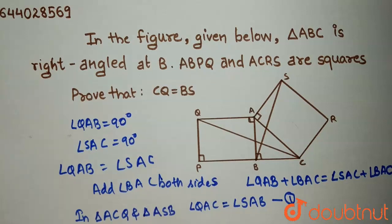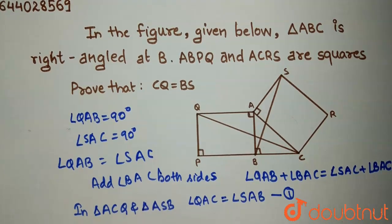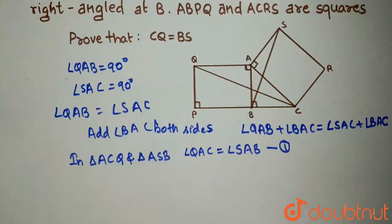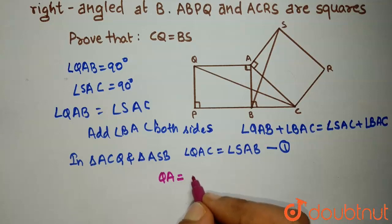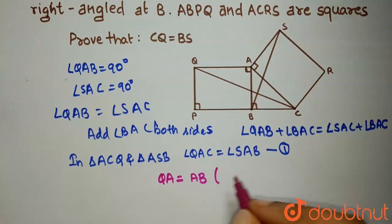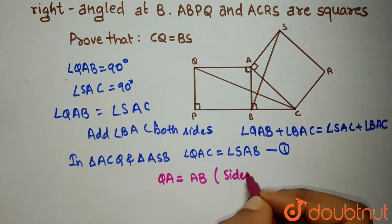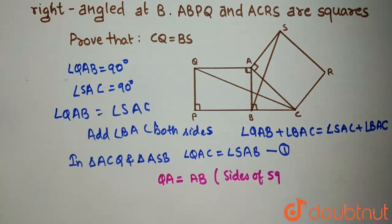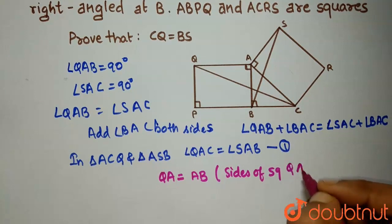what you will get is, from here you get QA equals AB. These are sides of square QABP.